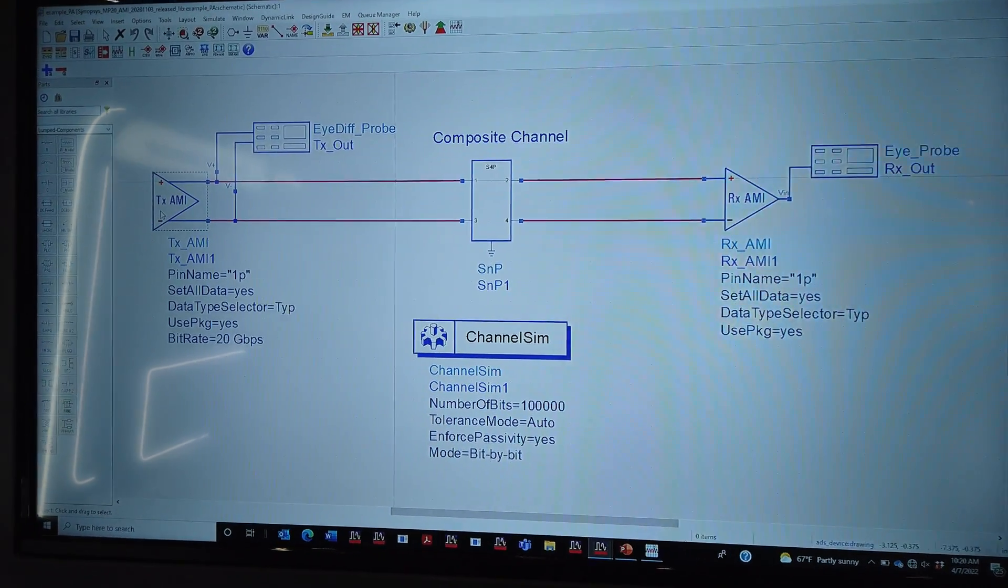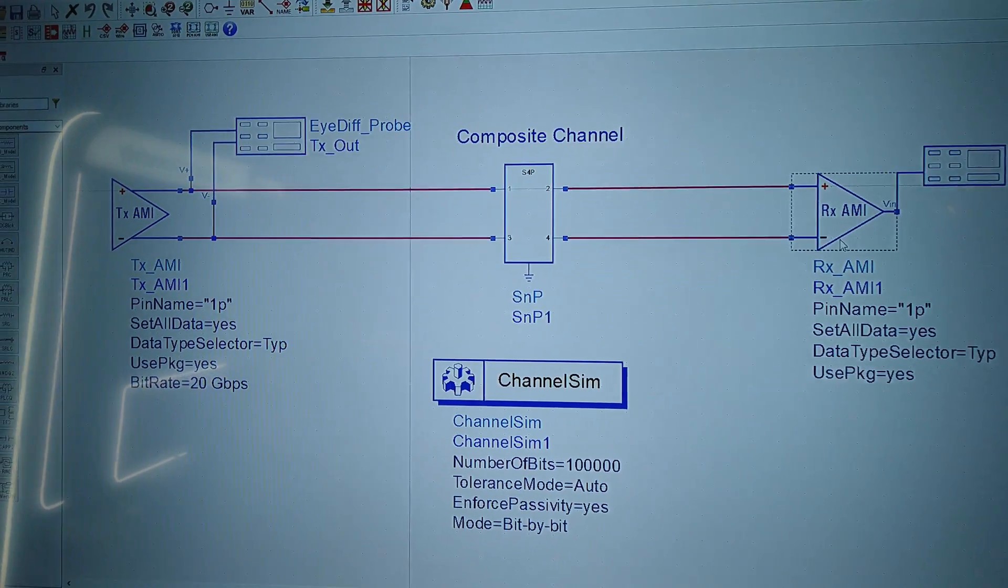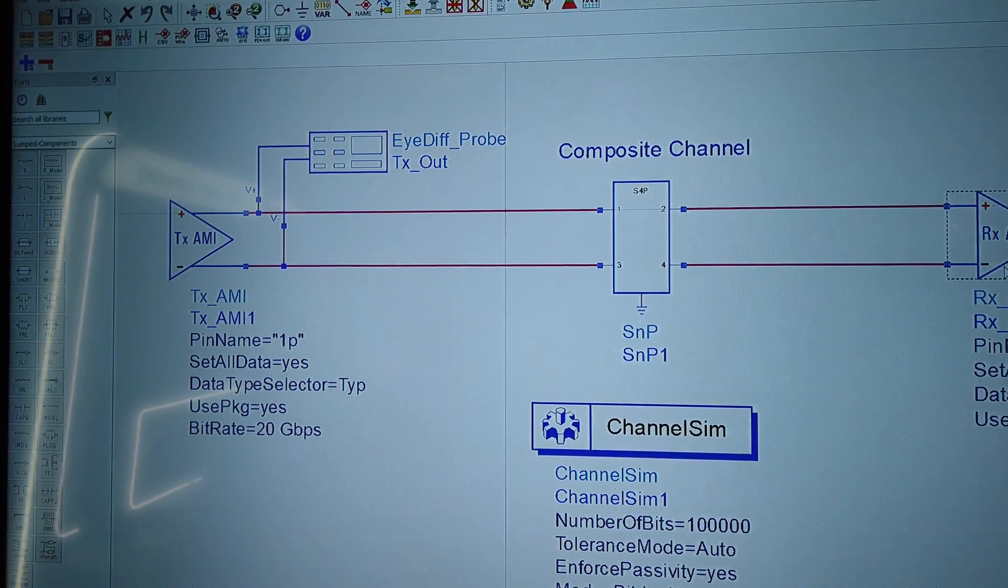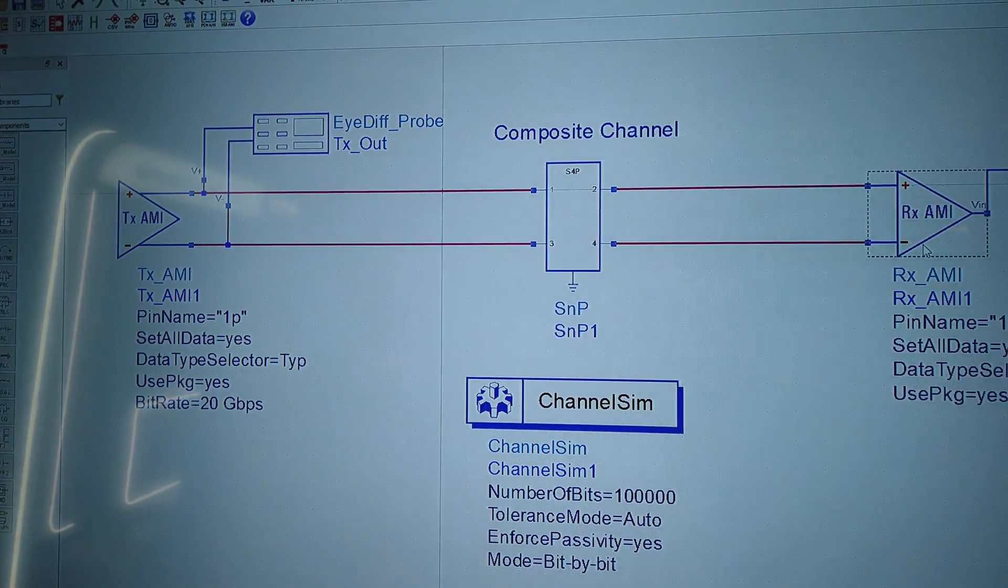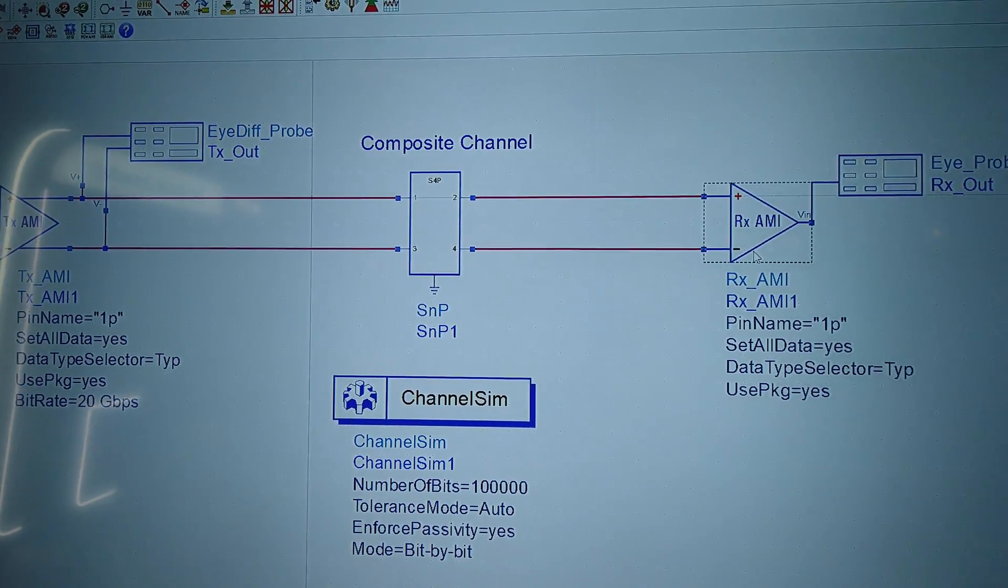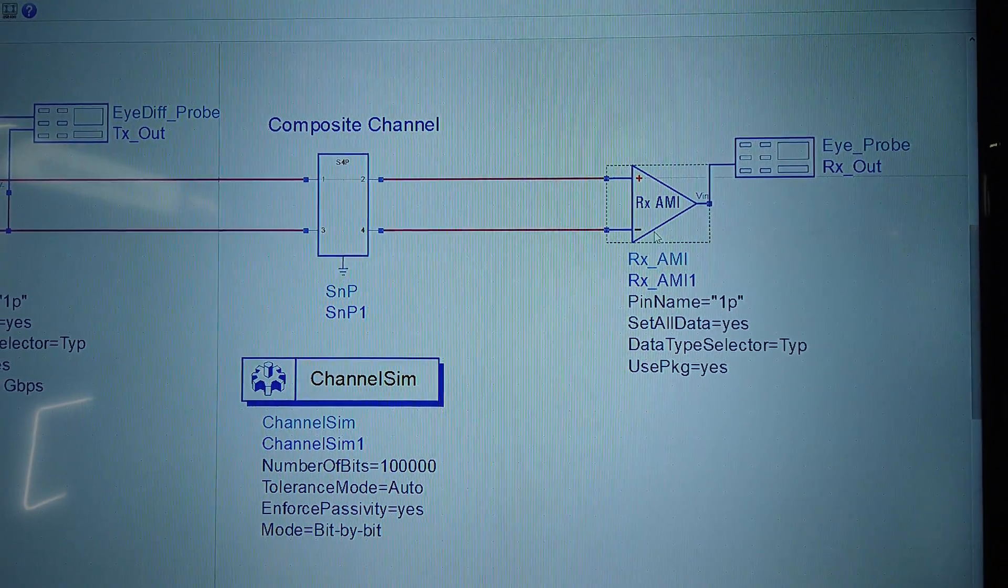What we have are a transmitter IBIS AMI model and a receiver IBIS AMI model that each are representing the transmitter and receiver for the DesignWare 5 from Synopsys.